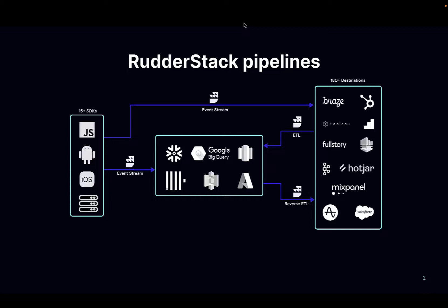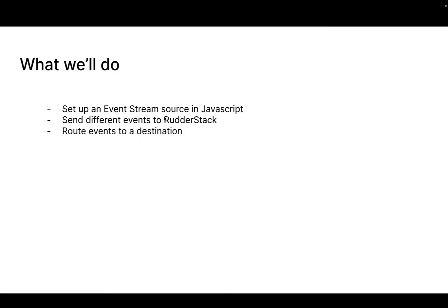In this part, we will be focusing more on event streams, which will allow us to collect our event data from web, mobile, and server-side applications, then route that data to a variety of different destinations — either our sales and marketing analytics tools or our cloud data warehouse destinations. We'll look at how to set up an event stream source mainly using JavaScript, the different event types we can send, and how to route those to a destination.